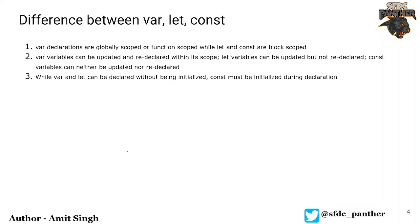Hello everyone, welcome back to the course. In the previous video we talked about what JavaScript is and the various variables we can create. In this video we are going to talk about the actual difference between the three variables: var, let, and const. Var is globally scoped or function scoped, while let and const are block scoped. Let's quickly see this in the demo and then come back to discuss these points.